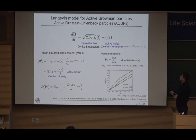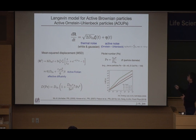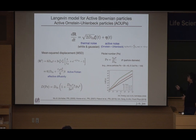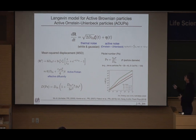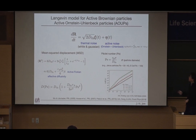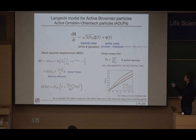The essential idea is a damped dynamics of this active particle. The motion is given by two noise terms. The first comes from the thermal fluid — this XI is an ordinary white Gaussian noise. We also have another noise, which is the active noise ETA. The easy approach is to model it as Gaussian and exponentially correlated, like an Ornstein-Uhlenbeck process, which has the same properties.